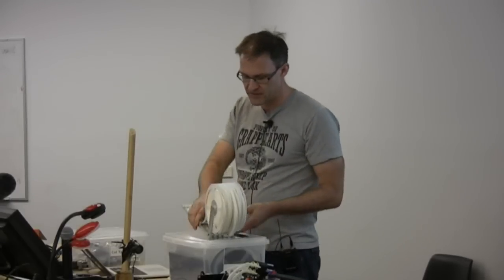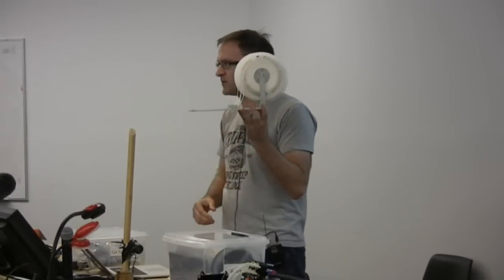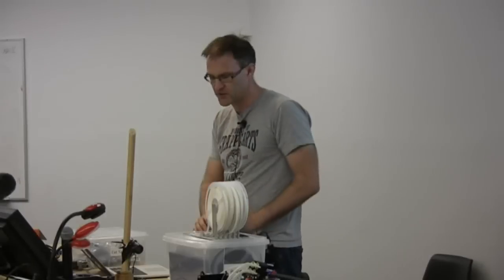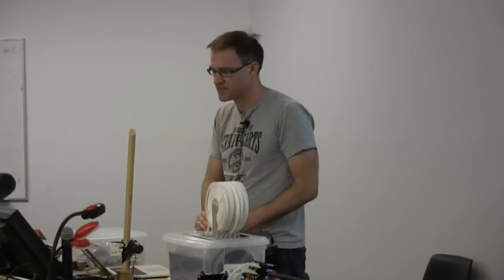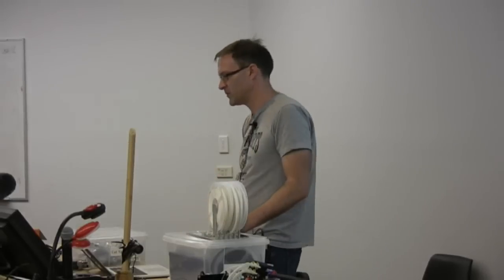So what I have here is a whole bunch of tapes sitting in a manual dispenser. Putting boards together by hand, typically what you would do is use a vacuum pickup or a pair of tweezers and lift the little parts off the tape and put them on the board under a microscope.